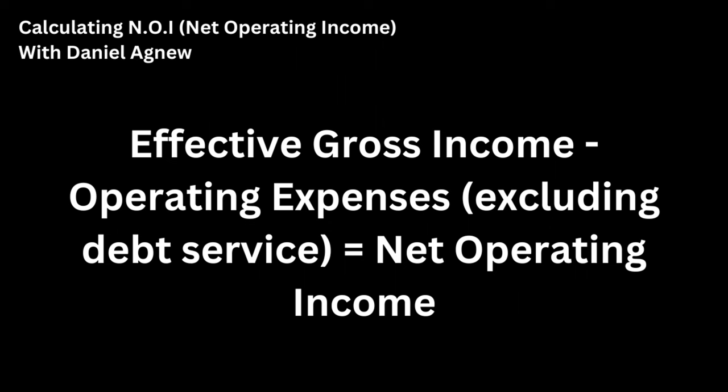How exactly do you calculate NOI? In very simple terms, you take your effective gross income and subtract your operating expenses, excluding your debt service, and you'll be left with your NOI. But you can break this down into further segments if you want to get more specific and accurate.